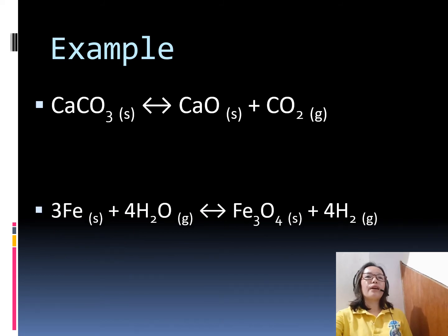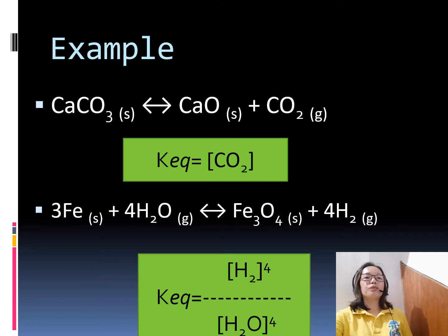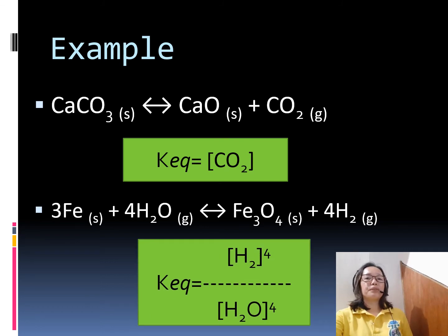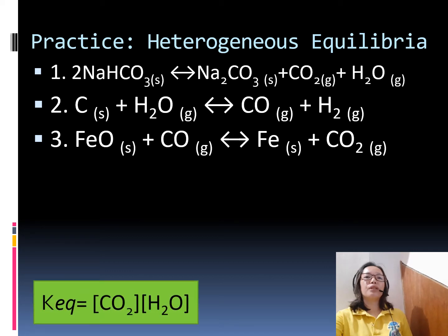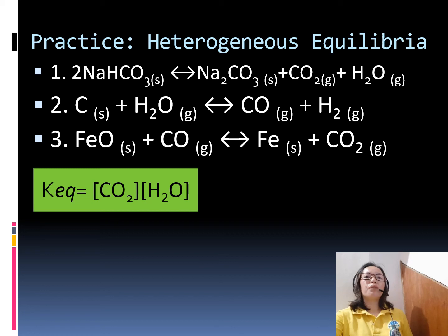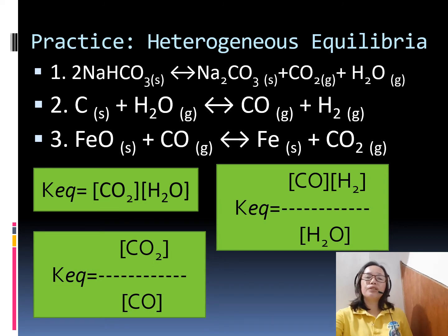For calcium carbonate yielding calcium oxide and carbon dioxide, only carbon dioxide gas will be part of the expression. For another example, the product includes only hydrogen in the gaseous state, and the reactant includes water raised to the fourth power. In the remaining heterogeneous examples: the first includes only carbon dioxide and water; the second has carbon monoxide and hydrogen as products and water only as reactant; and the third has carbon dioxide as product and only carbon monoxide as reactant. Remember: liquids and solids do not appear in the equilibrium constant expression.